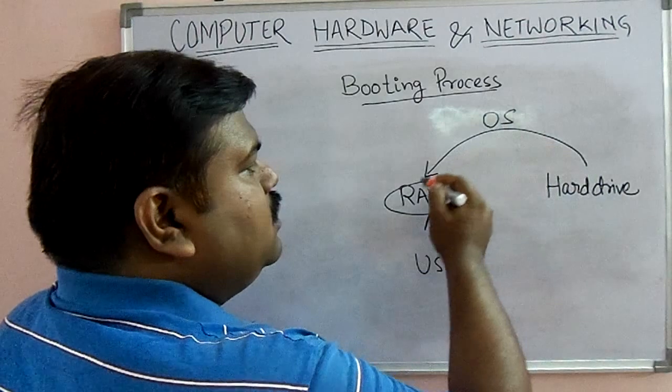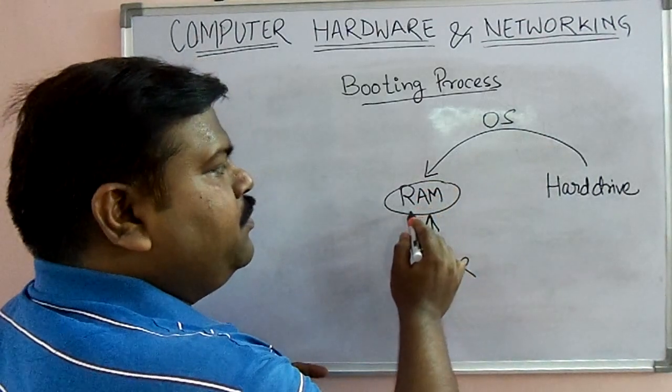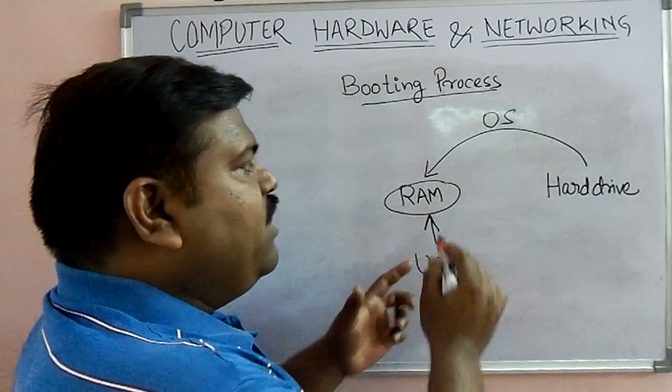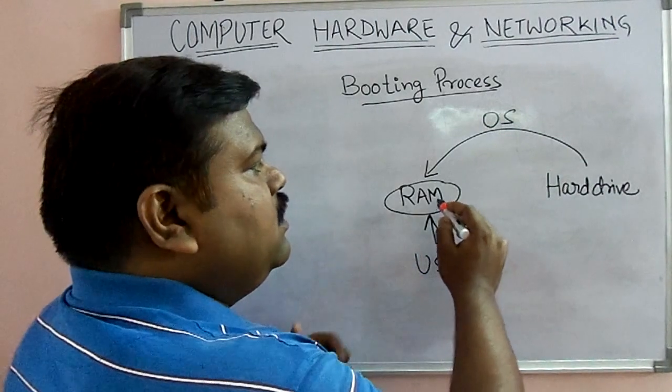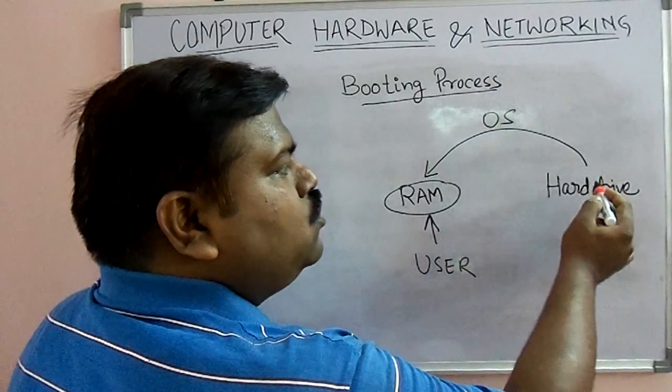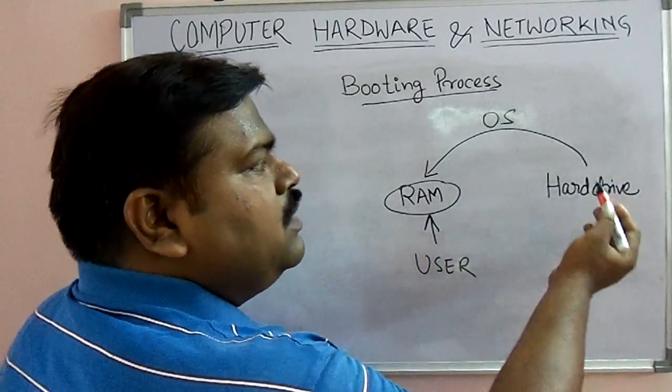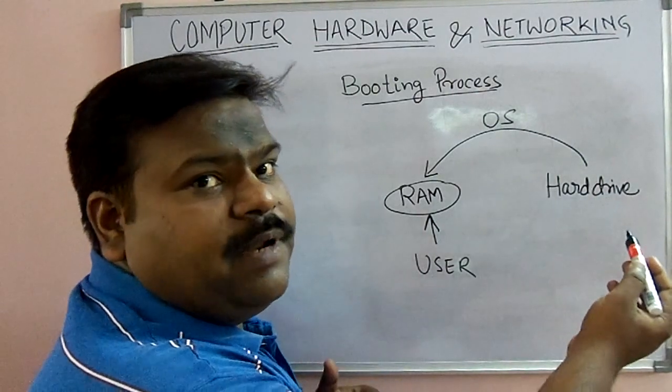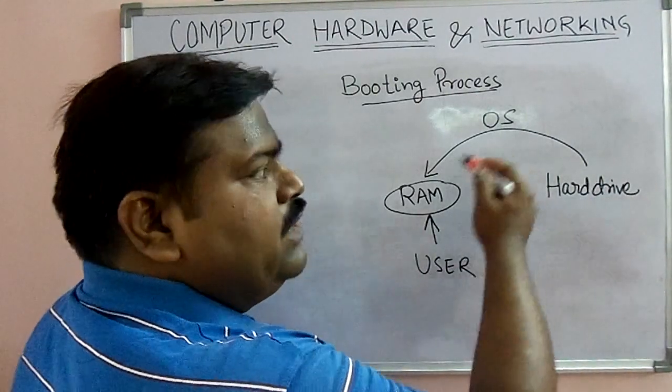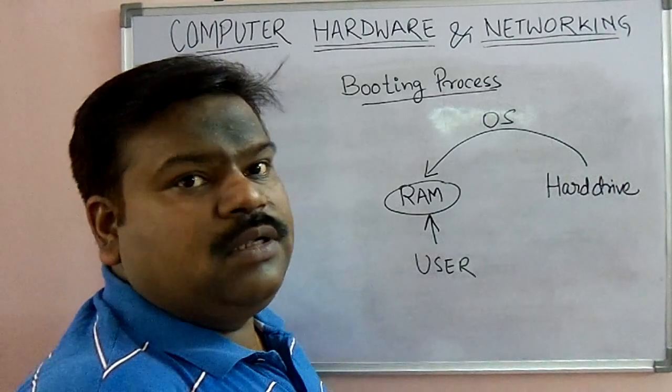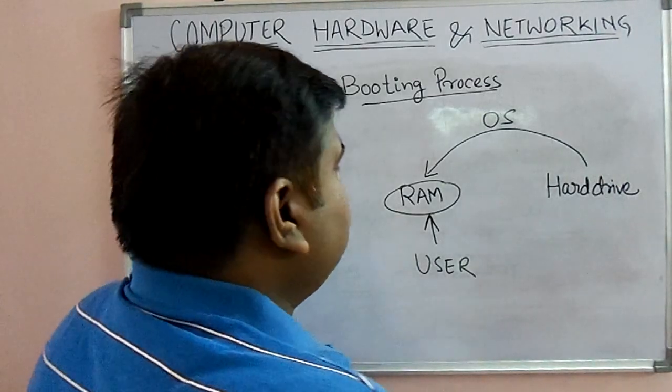When we save something, then from RAM it goes to the hard drive. Because the hard drive is permanent storage, when we save something it goes to the hard drive and stores there permanently.